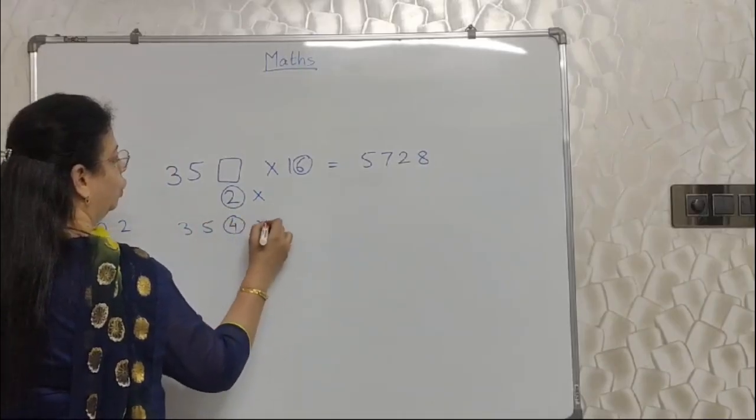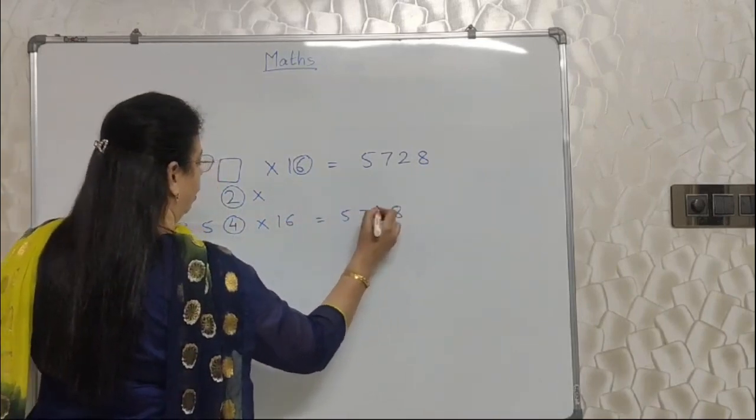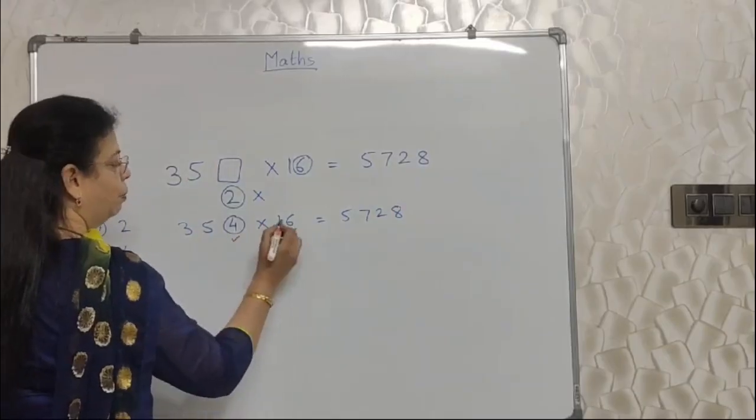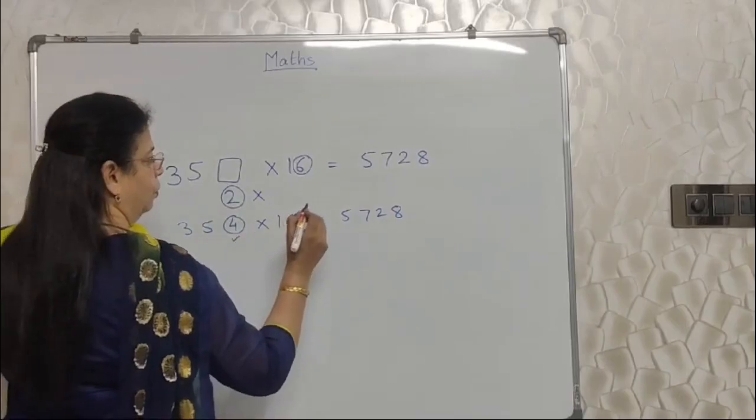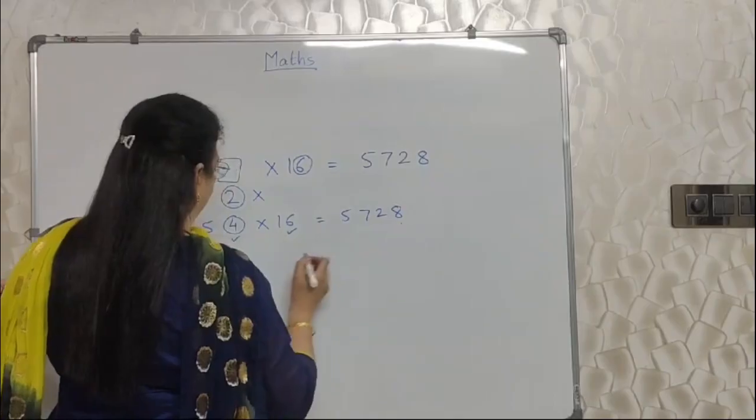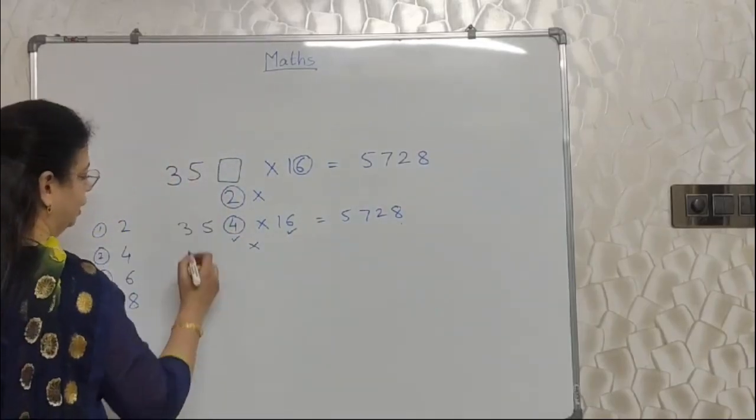Then option 4. 354 into 16 is 5728. How will I find out? I will take help of this unit place. This unit place. I will multiply them. 6, 4 are 24. 24 has again units place 4. Is there 4 here? No. So this option is also wrong.